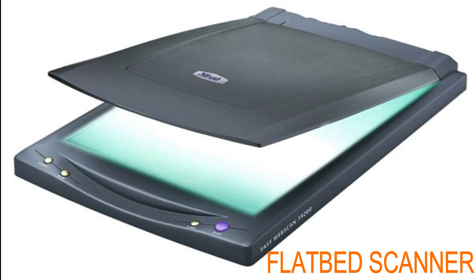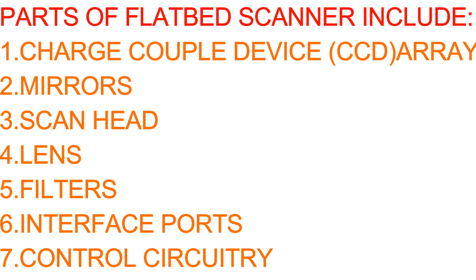Flatbed scanners are desktop scanners. Parts of a typical flatbed scanner include a charge-coupled device array, also called a CCD array, mirrors, scan head, lens, filters, an interface port, and a circuit. These are the components of the flatbed scanner.